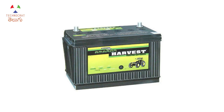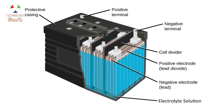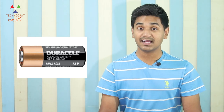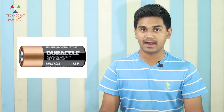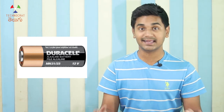In your car, you can use lead-acid batteries with electrodes and sulfur in the electrolyte. We have a remote control, and we have batteries in our wall clocks — those use alkaline batteries.